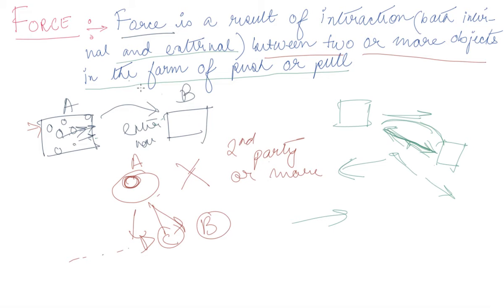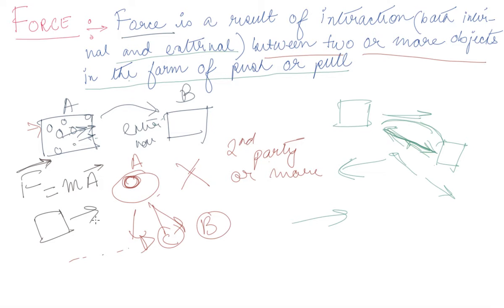Force is a result of interaction — both internal and external — between two or more objects, in the form of a push or a pull. Moving to the mathematical concept: you will often see F = ma, where F and a carry vector signs above them. If you are confused by vector notation, I advise looking into the chapters on vectors, but I'll explain it simply here.